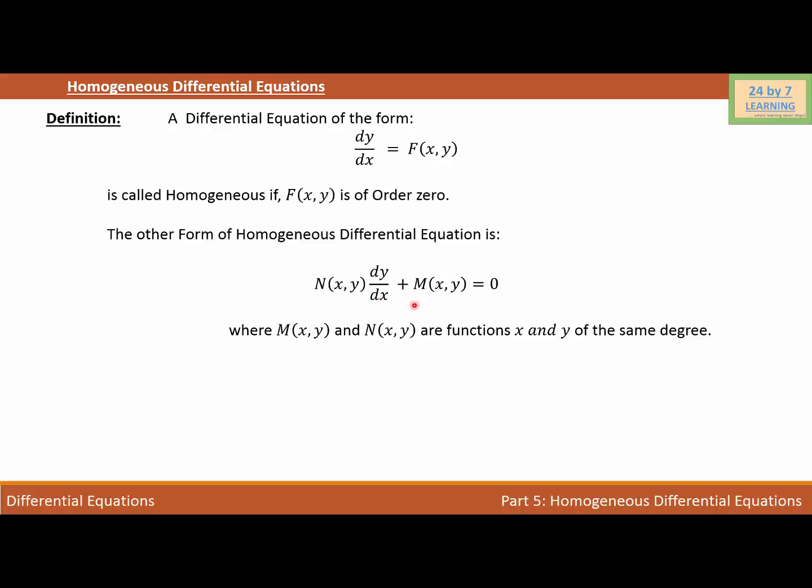Multiplying the whole expression by dx, the dx in the denominator cancels out and we have N(x,y)dy + M(x,y)dx = 0. The only thing we need to do to solve this differential equation is to integrate.